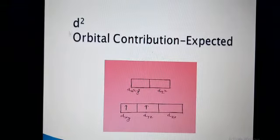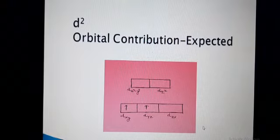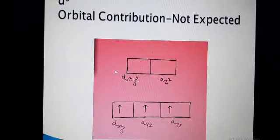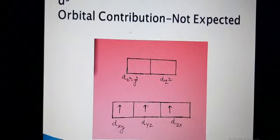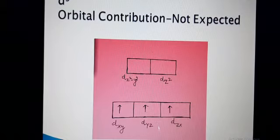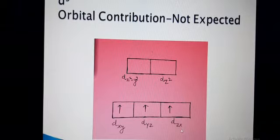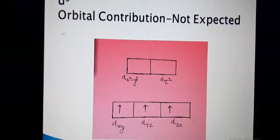For D2, the three conditions are fulfilled, so orbital contribution is expected. For D3, the orbital contribution is not expected because the third condition is not fulfilled. When the orbital is interconverted, the DZX already contains an electron with identical spin. So orbital contribution is not expected for D3.